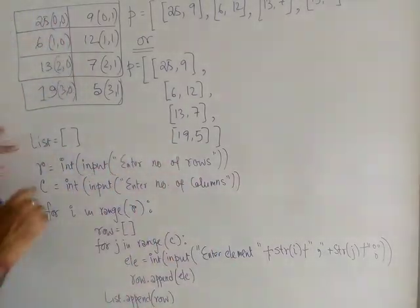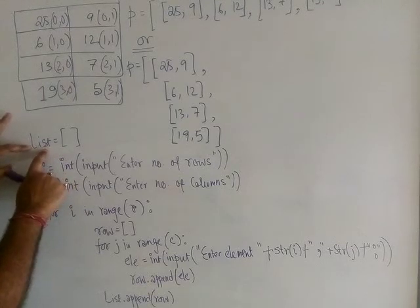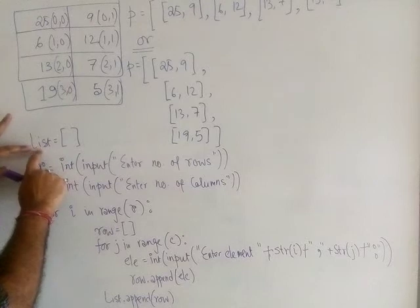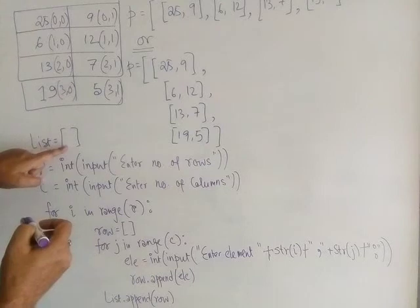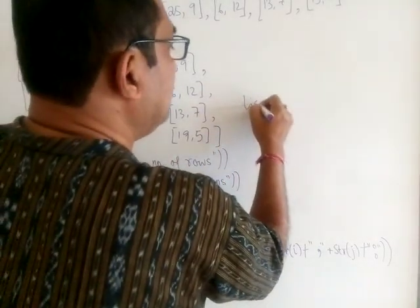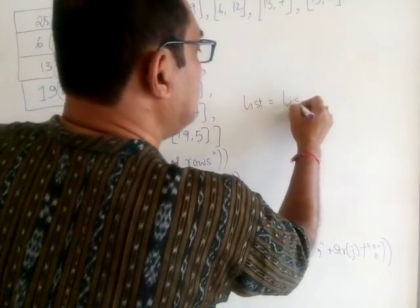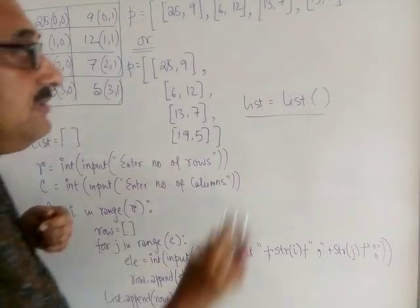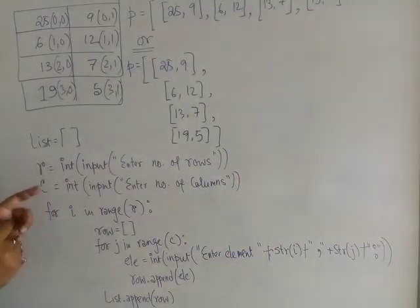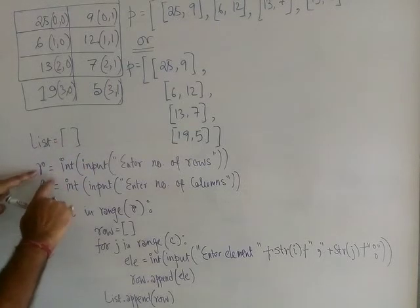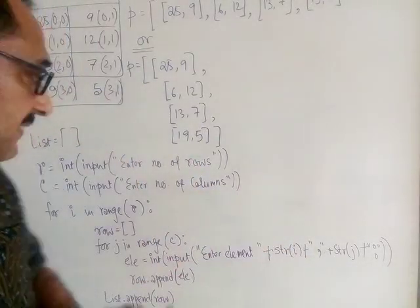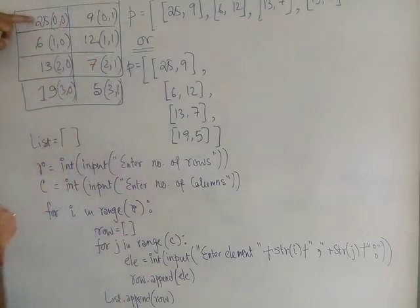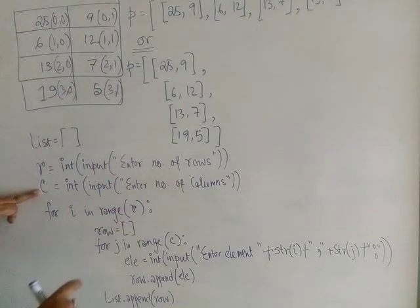Here I have taken a list variable to represent this double dimension array as a nested list. Initially there is nothing in it, so it is blank. Alternatively, you can write `list = list()` — that also gives a blank list. I then ask the user how many rows and how many columns they would like. In this case the user will enter four rows and two columns.